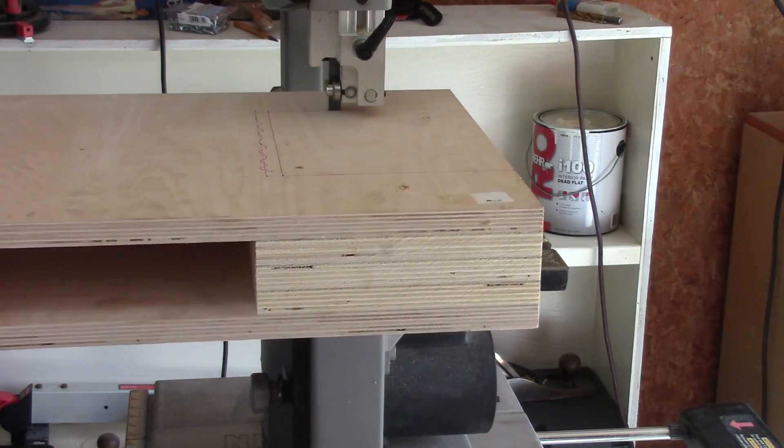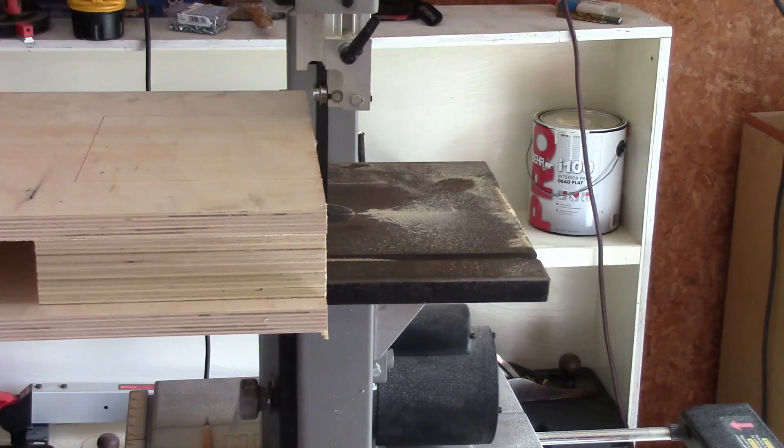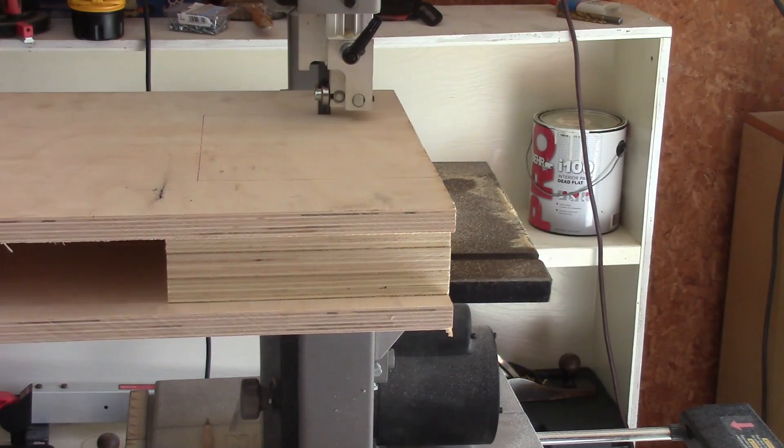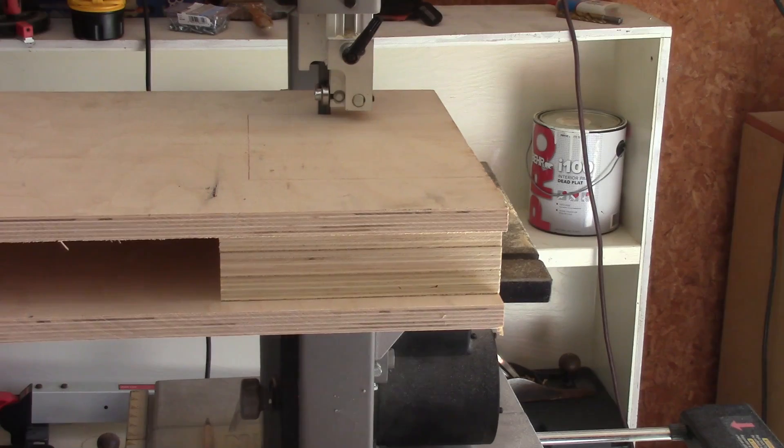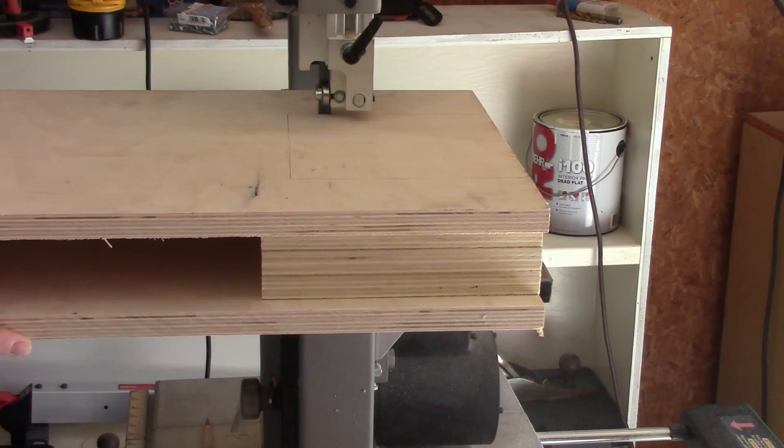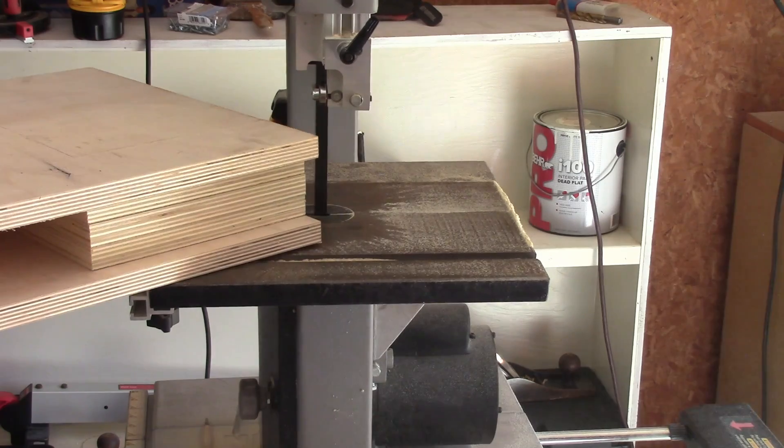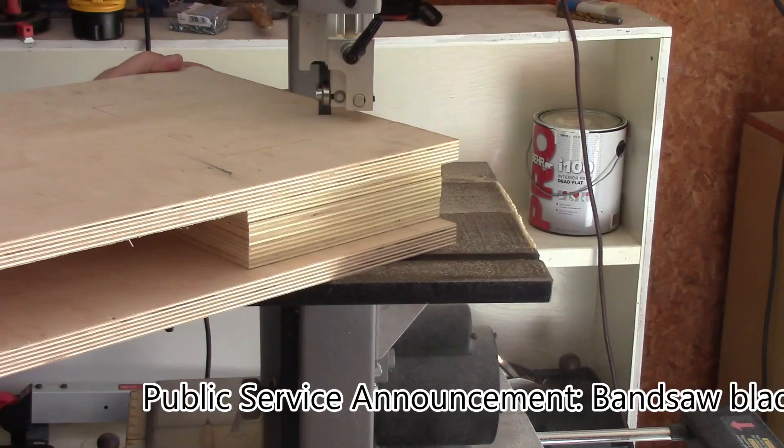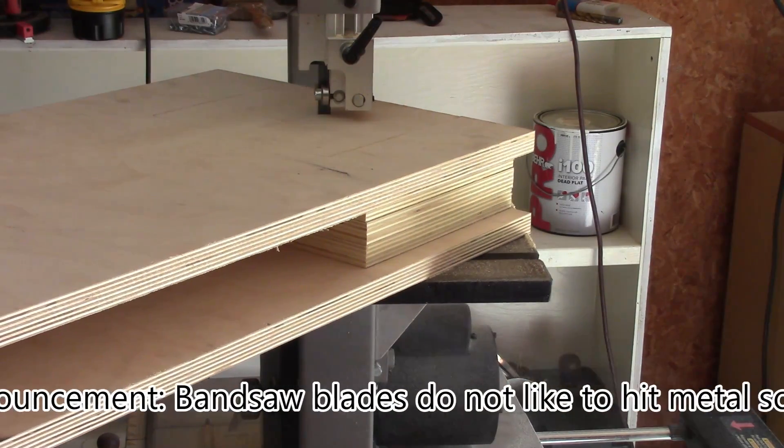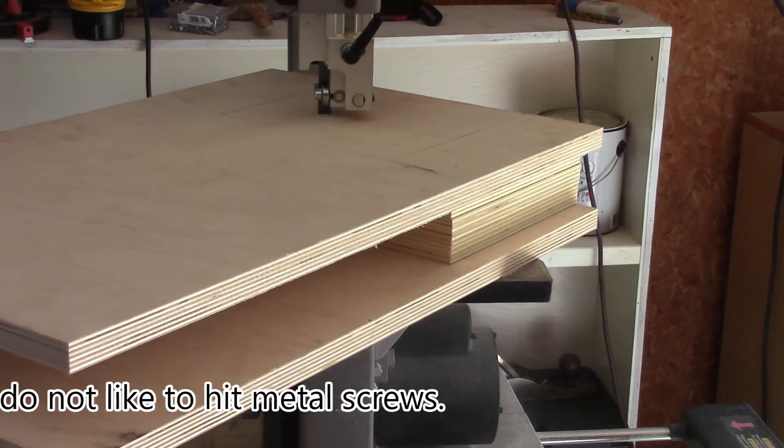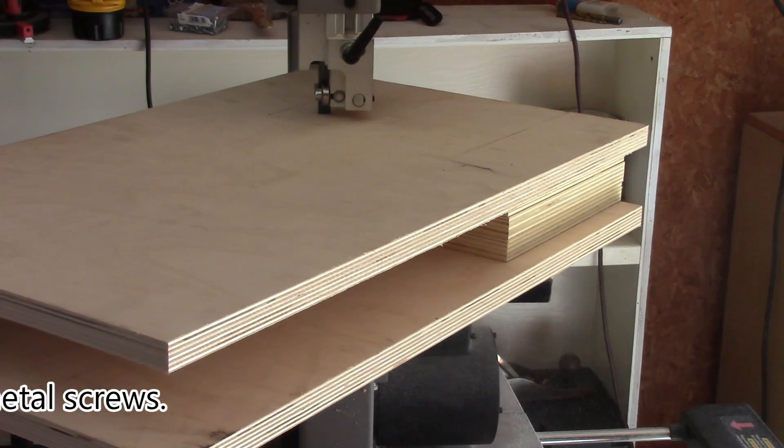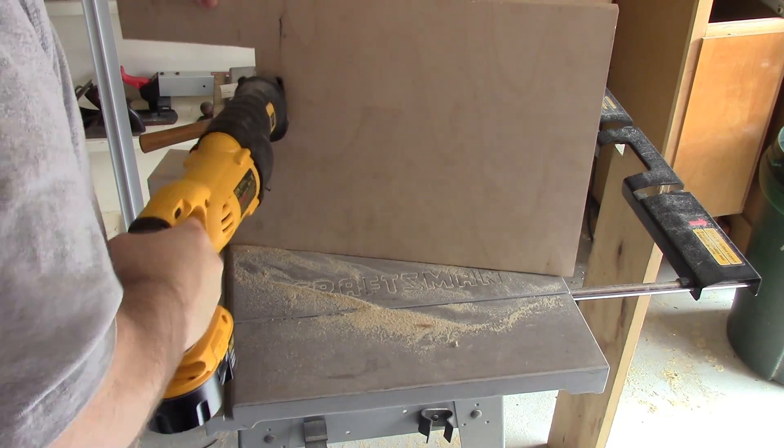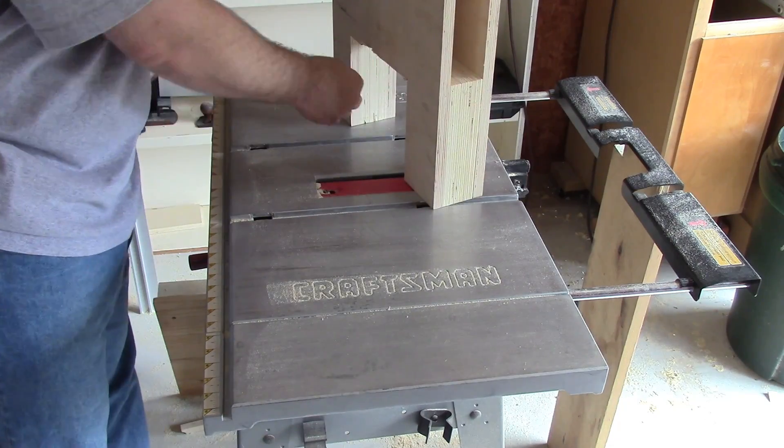This bandsaw blade has seen better days and it was really struggling to get through five layers of plywood. And here we hit one of the screws that I had used to hold the plywood together. I ended up having to finish cutting out the hole with the reciprocating saw. It wasn't pretty, but it does work.